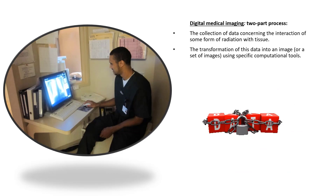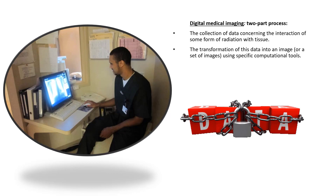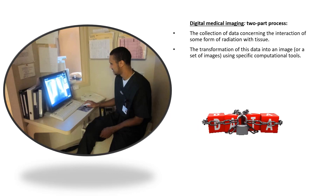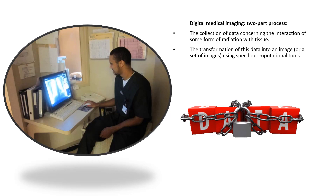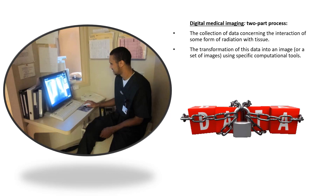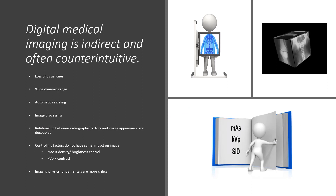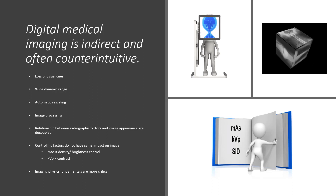Acquiring a digital image is a two-part process. The first is to collect data concerning the interaction of some form of radiation with the tissue in the area of interest. The next is to transform this data into an image or set of images using specific computational tools. The process of acquiring data to make a digital image is indirect and often counterintuitive, meaning that we have a loss of visual clues to make adjustments.